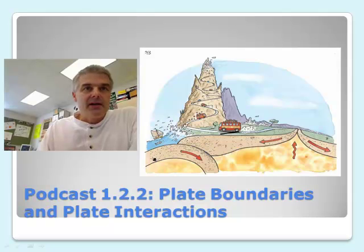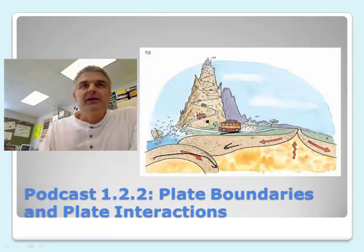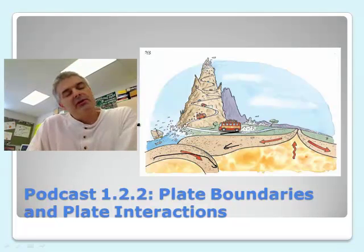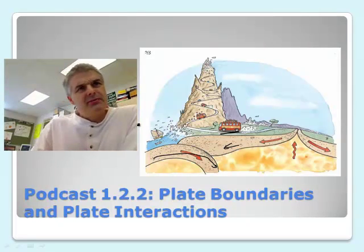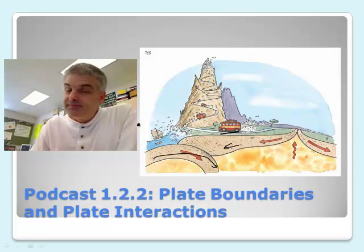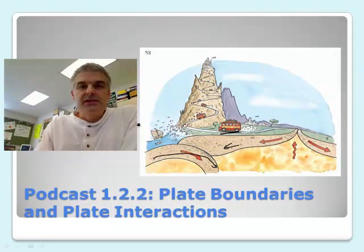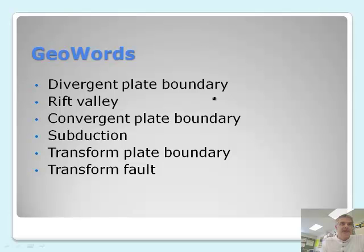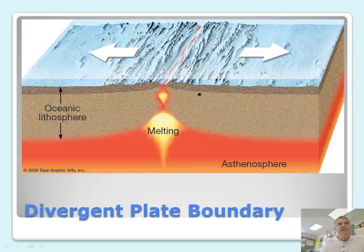Here we have our picture, our guy driving up here, we've got a plate coming down here, kind of going underneath another. Where's the most interesting place that you could be on a plate? There are a number of types of words we're going to look at: divergent boundaries, rift valleys, convergent plate boundaries, subduction, transform, and transform faults.